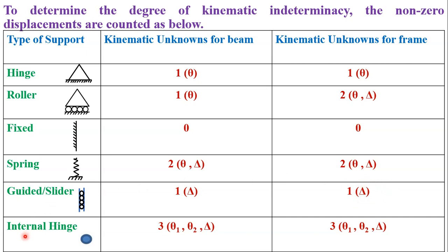If a hinge is inserted in a beam, it permits 3 degrees of freedom — 2 slopes or rotations and 1 displacement — in case of a beam as well as in case of a frame.